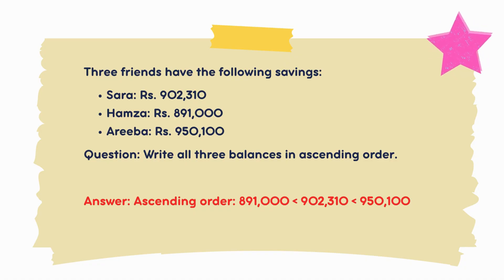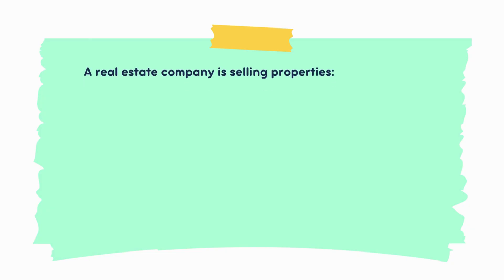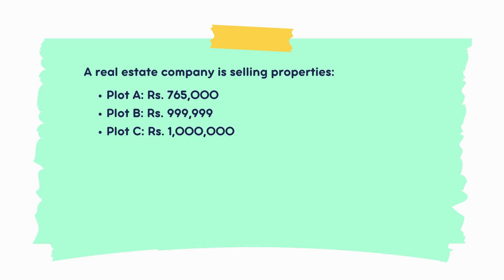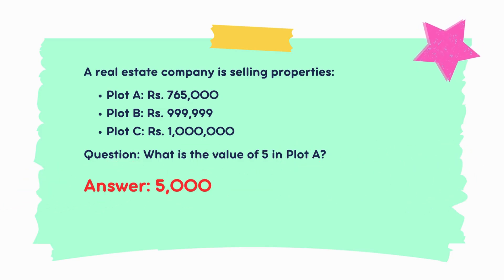A real estate company is selling properties: Plot A — rupees 765,000; Plot B — rupees 999,999; Plot C — rupees 1,000,000. Question: what is the value of digit 5 in Plot A? The answer is 5,000.